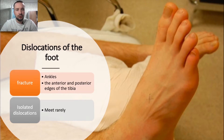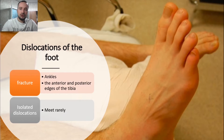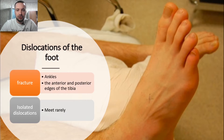Dislocation of the foot: dislocations in the ankle joint are usually combined with fractures of the ankles or the anterior and posterior edges of the tibia. Isolated dislocations of segments of the foot or its individual bones are relatively rare. When diagnosing such pathology, patients should be urgently referred for inpatient treatment.